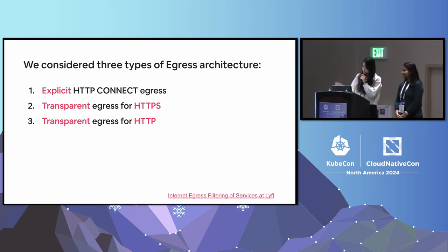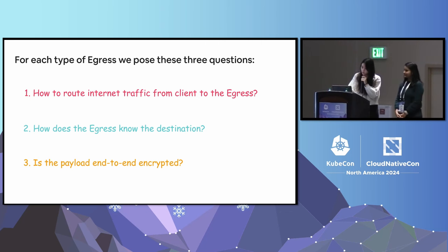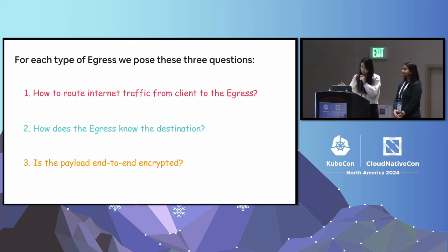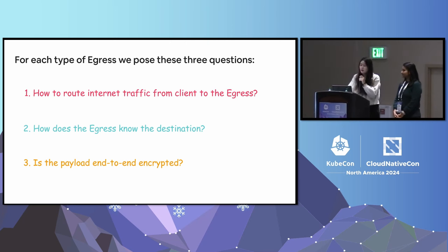For each type of egress, we want to think about three questions: How do we route internet traffic from the client to the egress? When traffic arrives at the egress, how does the gateway know the destination it wants to route to? And is the payload end-to-end encrypted between the client and the destination?